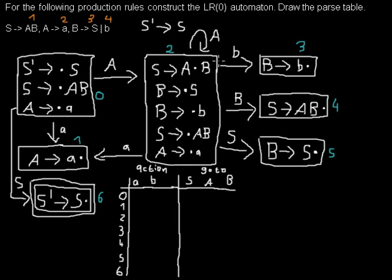We now want to create the parse table. For that I gave the states some numbering. So this is state 0, 1, 2, 3, 4, 5 and 6. But the order doesn't really matter.